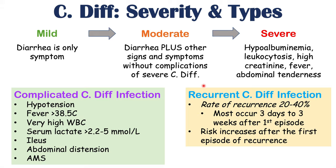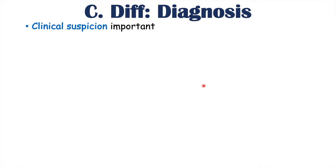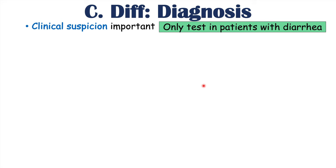Clinical suspicion is very important in diagnosing a C. diff infection. Seeing that the patient has diarrhea and had antibiotics prior — even up to three months before — is an important clue, as is a recent hospitalization. It's important to note that clinicians should only test for C. diff in patients with diarrhea, since some patients are asymptomatic carriers who may test positive without having symptoms.